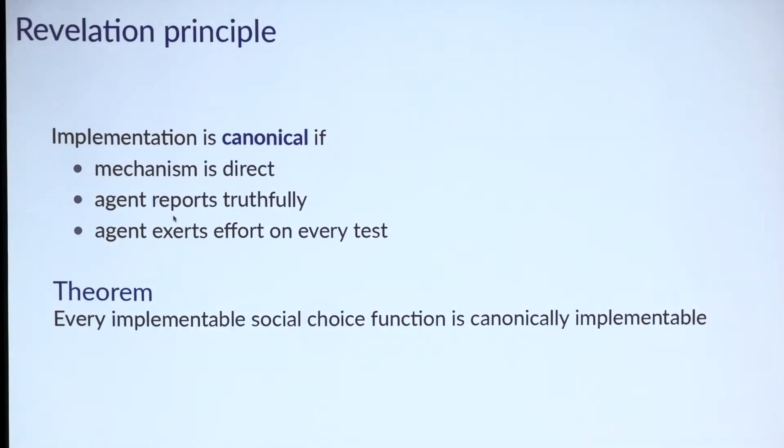Now let's turn to the results. First, we established the revelation principle. This may seem boring, but remember the example—this doesn't always hold with verification. To state the principle, let me define canonical implementation. We say implementation is canonical if the mechanism is direct—messages correspond to type reports—the agent reports truthfully, and the agent exerts effort on every test. Because our model separates communication from testing, we're able to establish the revelation principle in this standard form. Every implementable social choice function is canonically implementable.